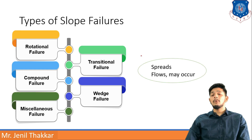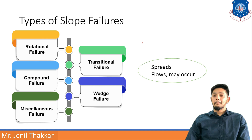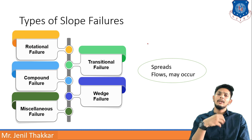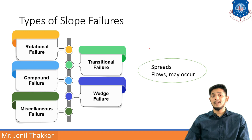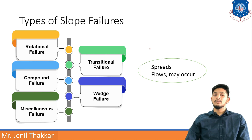Apart from all these, some failures are very complex to understand — these are miscellaneous failures. Sometimes the whole slope spreads easily into the soil with no clear failure symptoms or reasons, making them very complex to analyze. Flows from mountains or slopes also fall into this category.